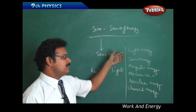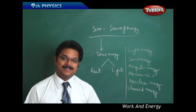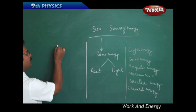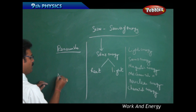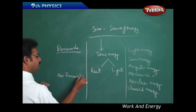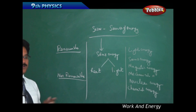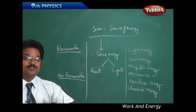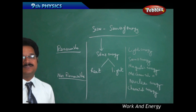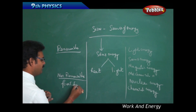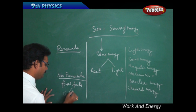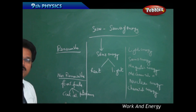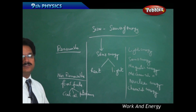These energies we discussed are divided into two parts: renewable and non-renewable. Non-renewable energy means consumption of energy is more than production. We use a large amount of energy but production is very less. Examples are fossil fuels like coal, oil, and petroleum. Production of these is less and we have less storage in the earth, but usage is more.